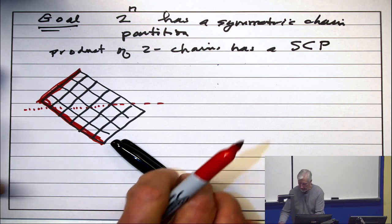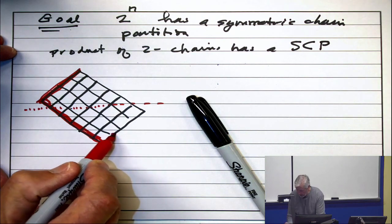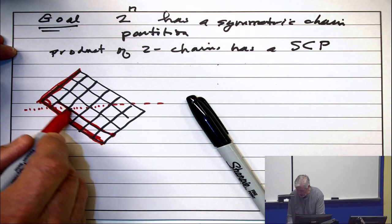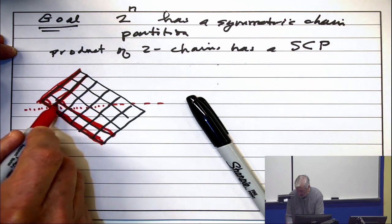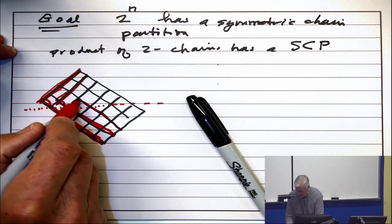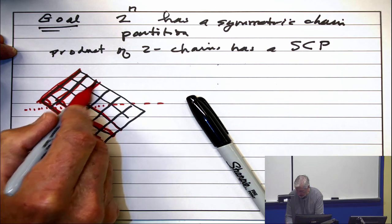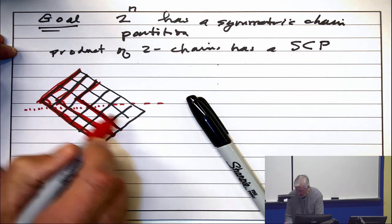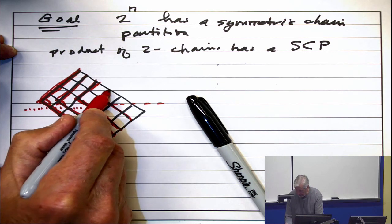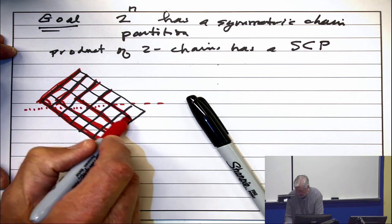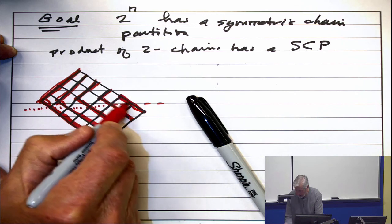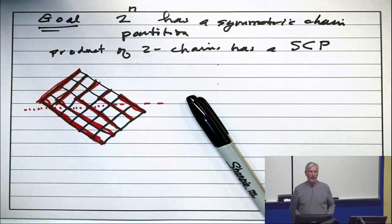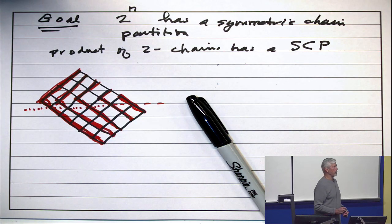What do I do next? Just repeat that process. Start here. Go up here. Take these points. And repeat that process. And repeat that process. And repeat that process. And there's a symmetric chain partition.